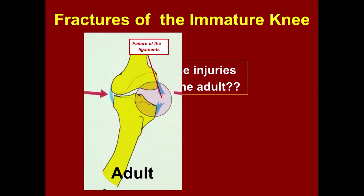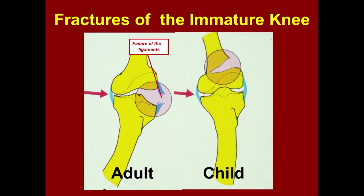Children have open growth plates. How does that affect the failure process if you have an acute valgus injury? It tends to fail at the physis rather than the ligaments. In the adult, failure occurs mostly in the ligaments — we hear about athletes tearing their ligaments. But in the child, it fails at the physis, because the ability to resist tension forces is less in the physis than in the ligaments.